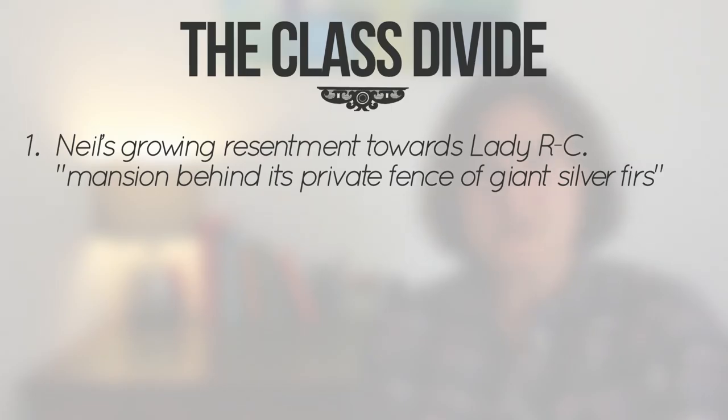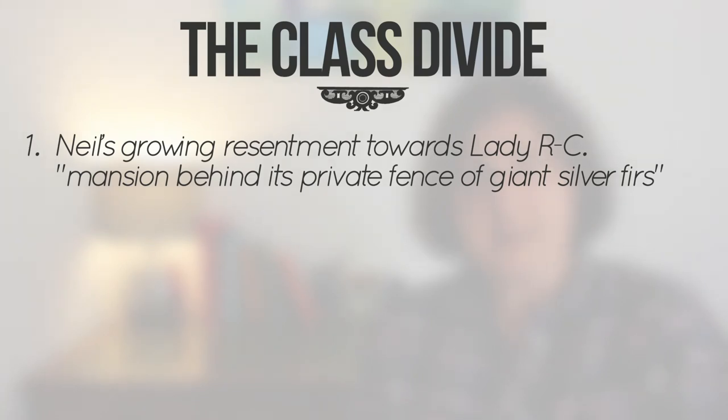Firstly, there's Neil's growing resentment towards Lady Runcie Campbell. This ill feeling is first referenced in the opening pages of the book when we're told that he is looking at the mansion behind its private fence of giant silver firs. His frustration surfaces again when he's complaining about the tiny rabbit hutch in which he and Callum are expected to live, although there are dozens of empty rooms in the mansion house, and when Callum is forced to be a beater in the Deer Drive, and yet again when they're ordered out of the beach hut by Lady Runcie Campbell.